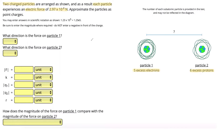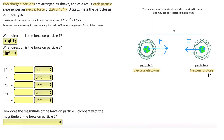Our first task is to figure out the directions of our forces. Particle one is negatively charged since it has five more electrons than protons. Particle two is positively charged since it has six more protons than electrons. Since we have opposite charges, there will be attraction between the particles — particle one experiences a force to the right and particle two experiences a force to the left.